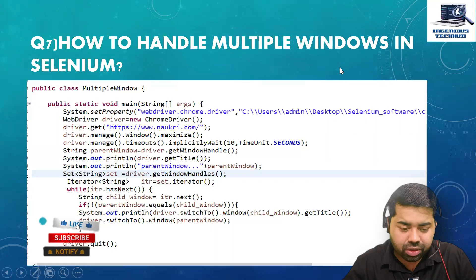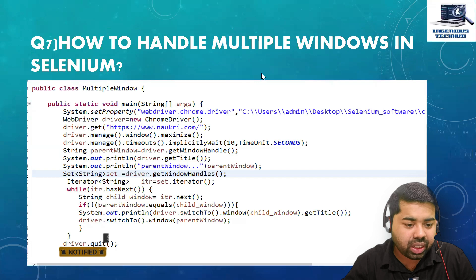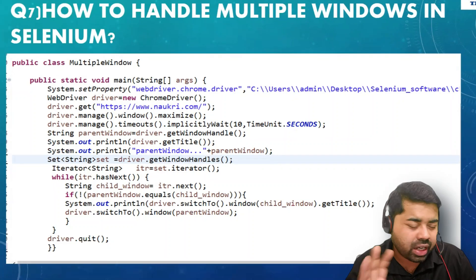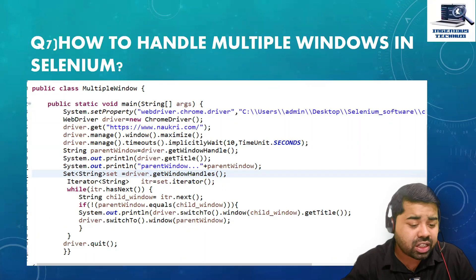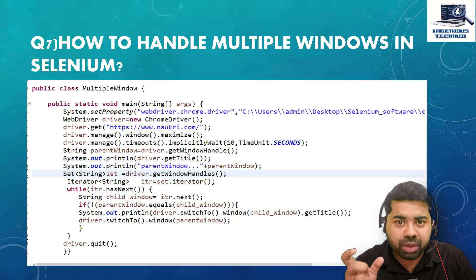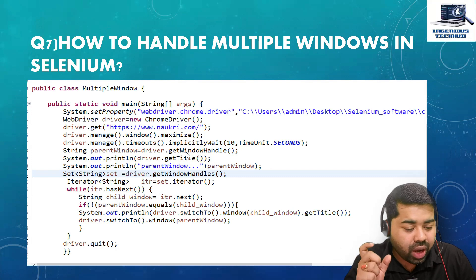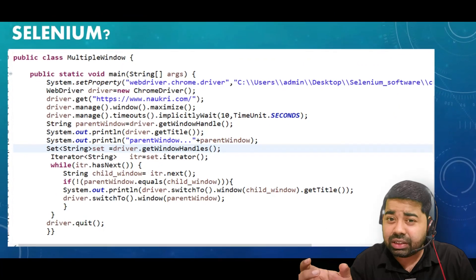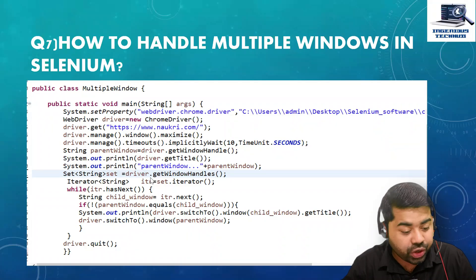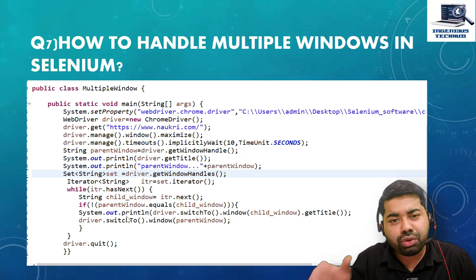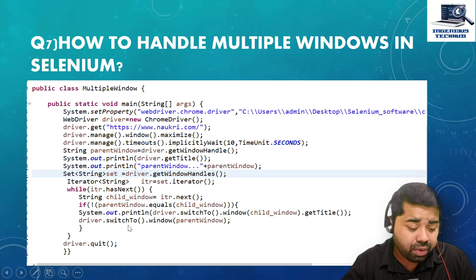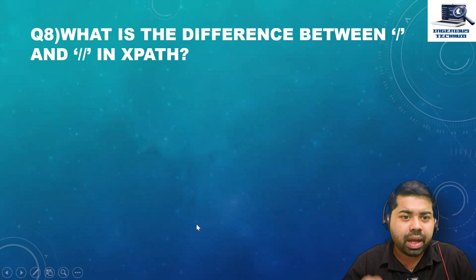How to handle multiple windows in Selenium? We have two steps. First, find the parent window ID using the method getWindowHandle — this returns the parent window ID. Then, to switch to a child window, use getWindowHandles, which returns a set of strings. We iterate using an iterator and apply a condition: if the parent window ID is not equal to the child window ID, we switch to it, perform some validation, then switch back to the parent window.